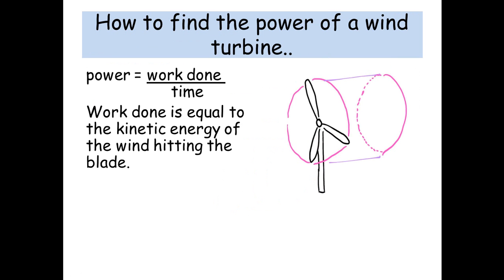The work done is equal to the kinetic energy of the wind hitting the blades. So we're going to go back to the old equation, half mv squared. But most of the time in the problems they won't give you the mass, so what you need to do is a little bit of a trick where we're going to find the mass of the air going past by multiplying the density by the volume.